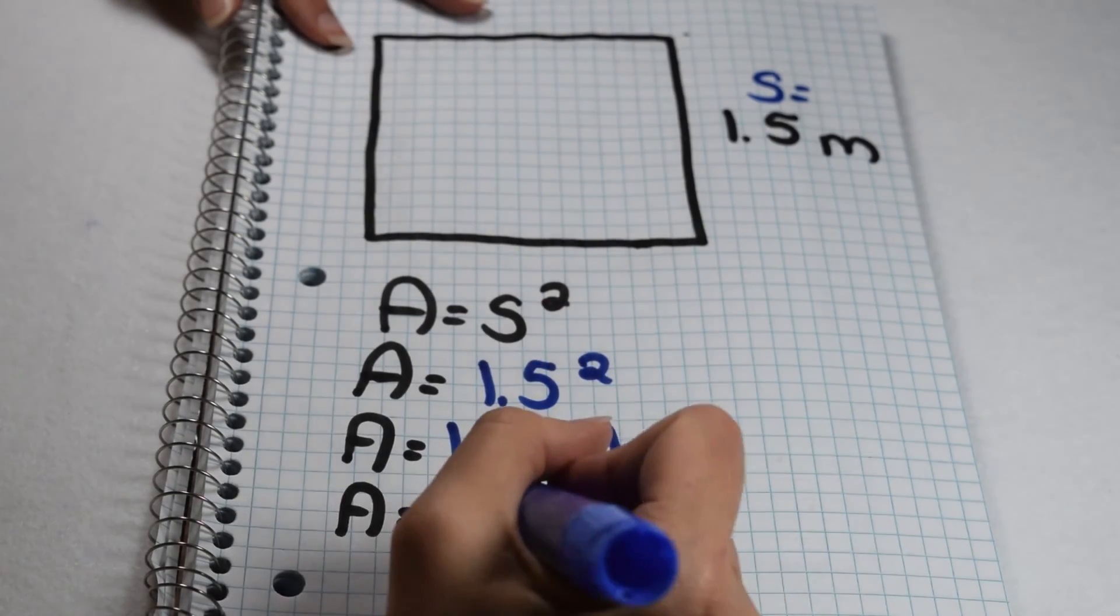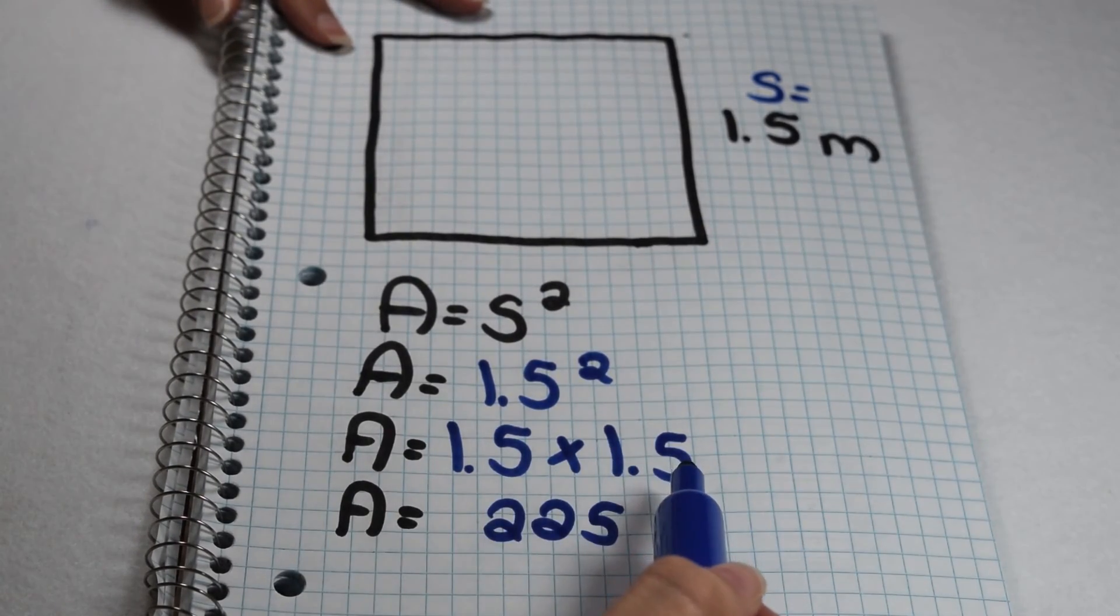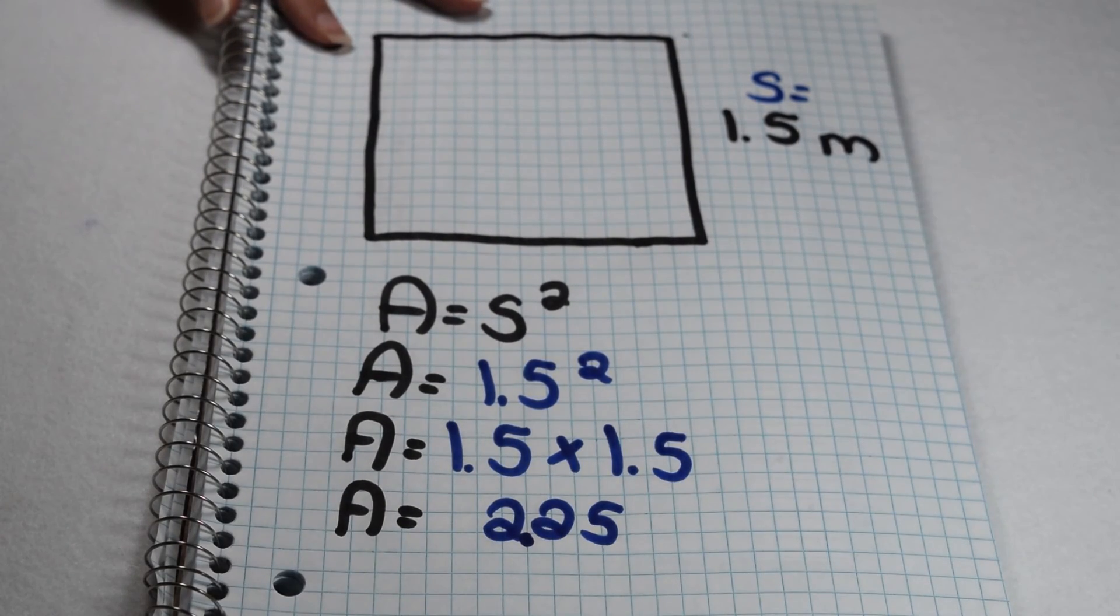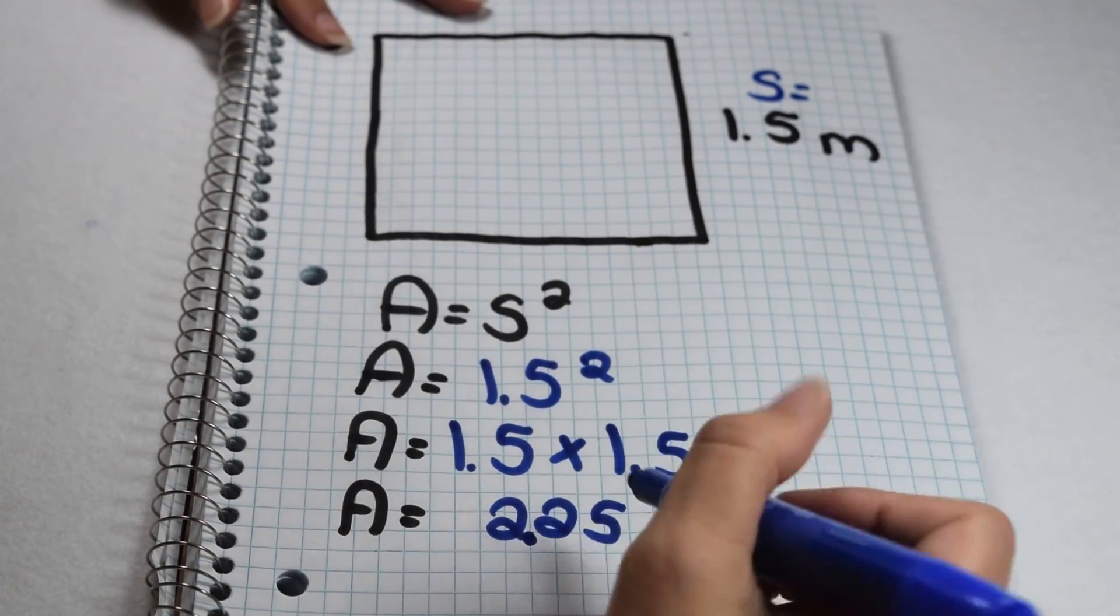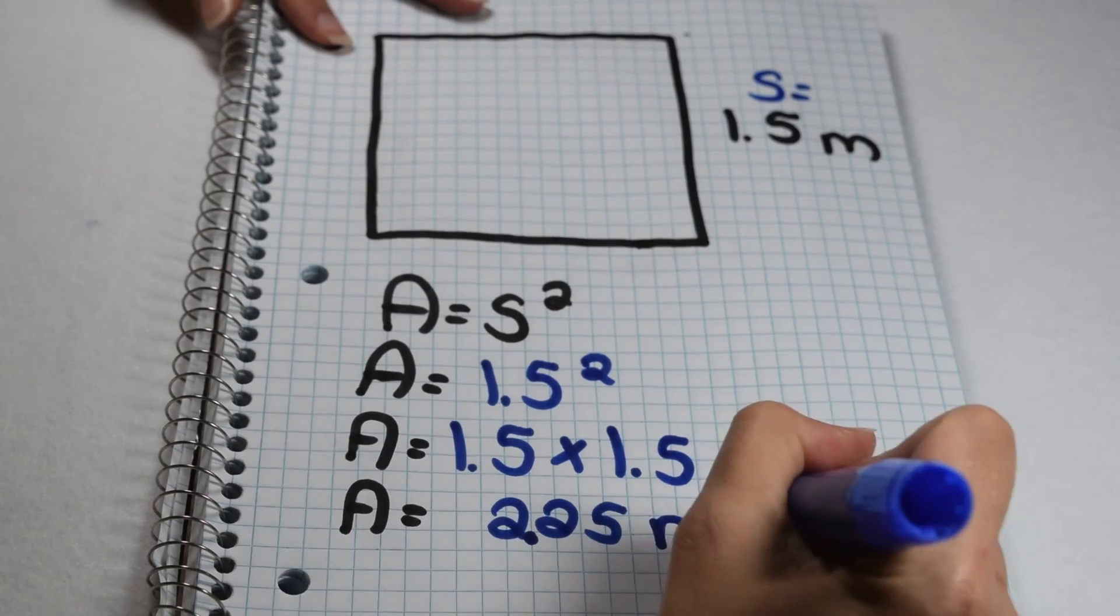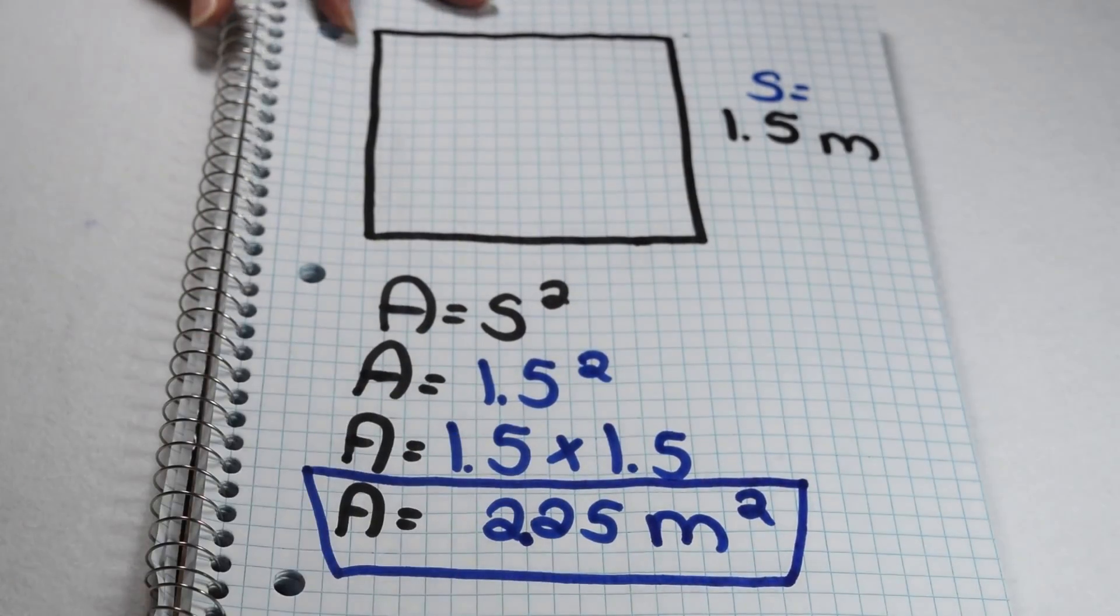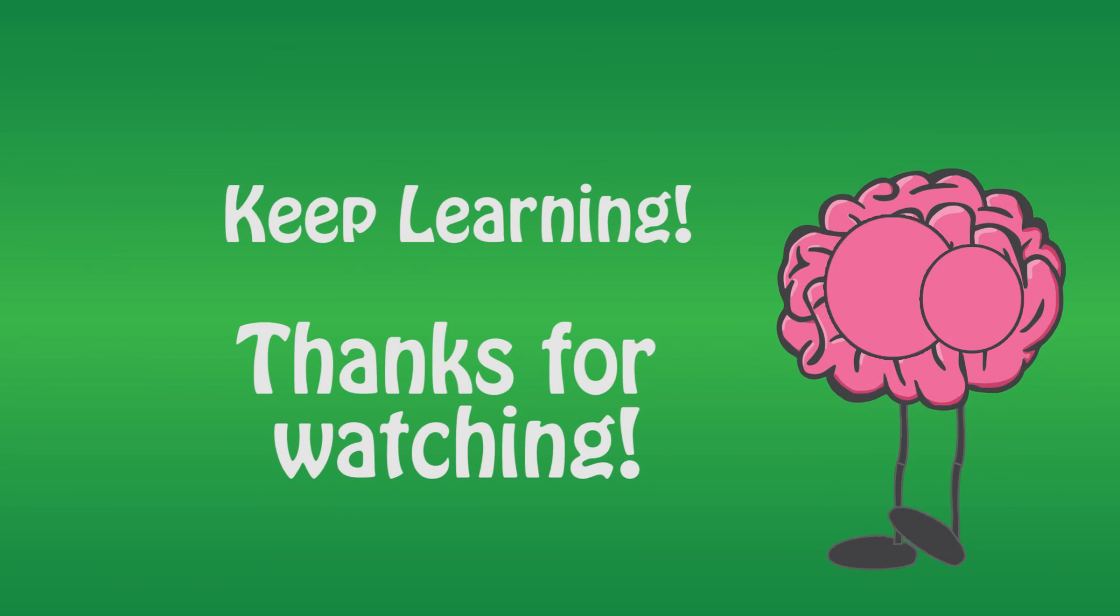Since each of the factors has 1 decimal place in it for 2 decimal places total, I know I'm going to need 2 decimal places in my product to make this 2 and 25 hundredths. Area is always labeled in square units. Since my square is drawn in meters, I'm going to label this as square meters. This means the final answer for area of my square is 2 and 25 hundredths square meters.